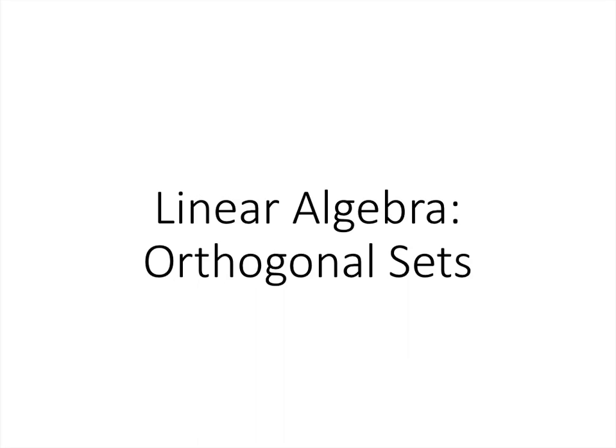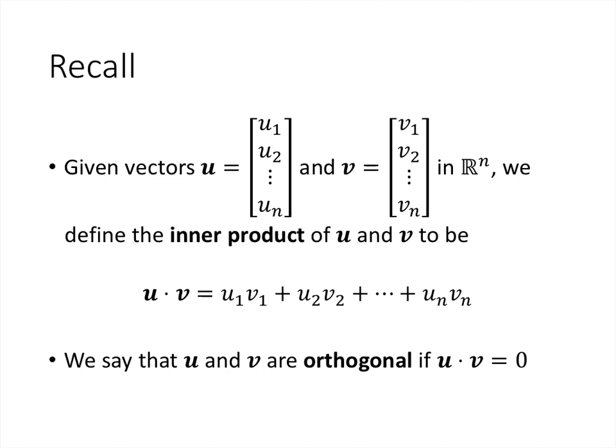In this lecture, we're going to talk about orthogonal sets. Recall that we defined the inner product of two vectors to be the sum of the products of the corresponding components of those vectors. And when that inner product, also called dot product, turns out to be the number 0, we said that the two vectors are orthogonal. This generalizes the idea of what it means for two vectors in R2 or R3 to be perpendicular.